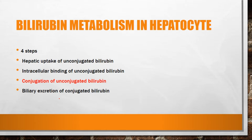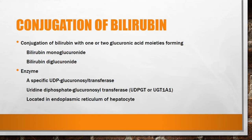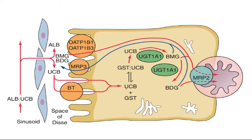The next step is conjugation of unconjugated bilirubin. Bilirubin can be conjugated with one or two glucuronic acid molecules. If conjugated with one, we call it bilirubin monoglucuronide; if conjugated with two, we call it bilirubin diglucuronide. The enzyme performing this function is UDP-glucuronosyltransferase, also known as UGT1A1 or uridine diphosphate glucuronosyltransferase, located in the endoplasmic reticulum of hepatocytes. UGT1A1 acts on unconjugated bilirubin to form bilirubin monoglucuronide, and further addition of glucuronic acid forms bilirubin diglucuronide.